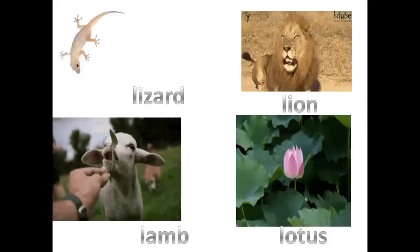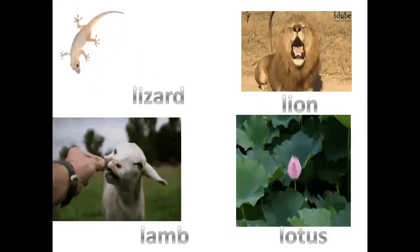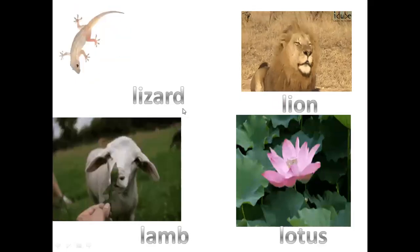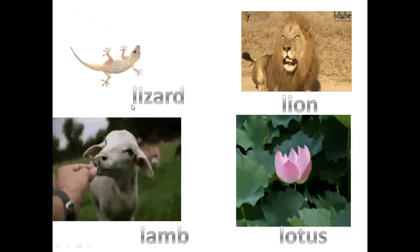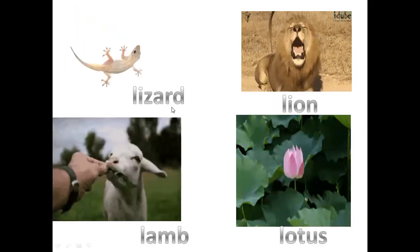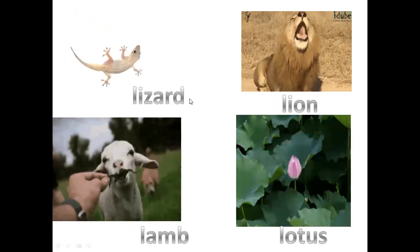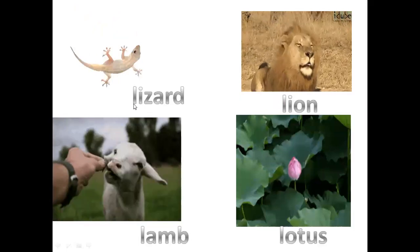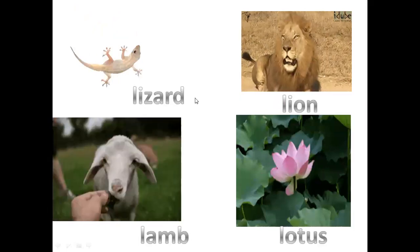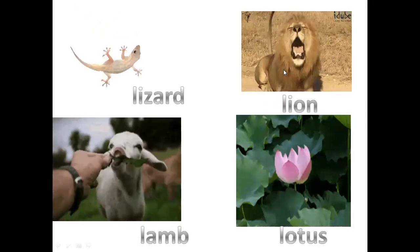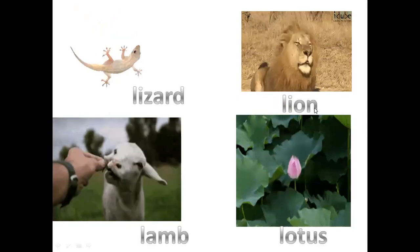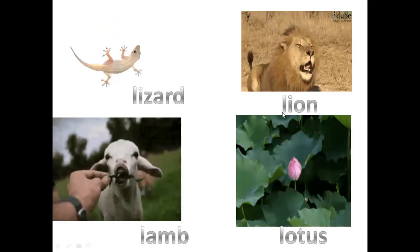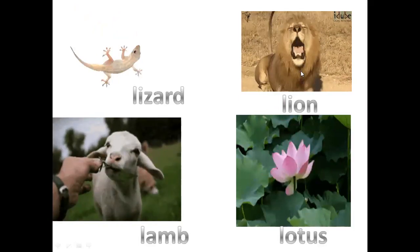Let's learn a few words with the letter L. This is a lizard. L for lizard — it's already in your textbook, isn't it? L, la, lizard. This is a lion. L, la, lion.